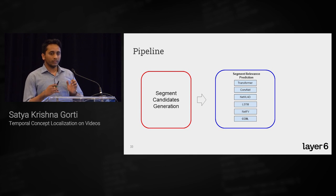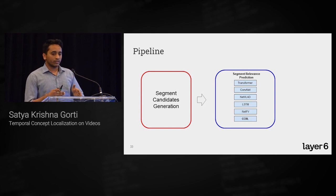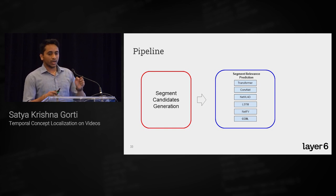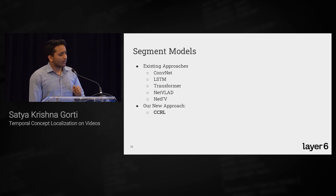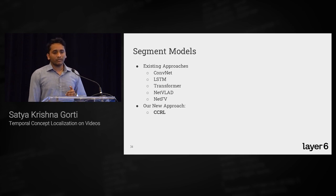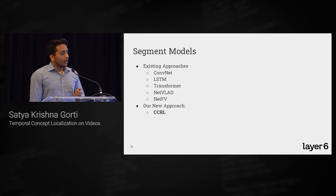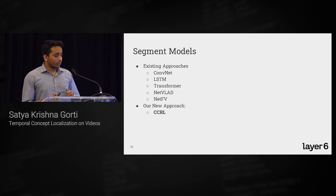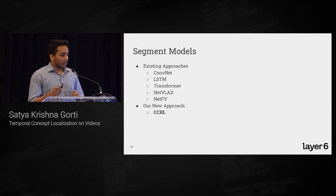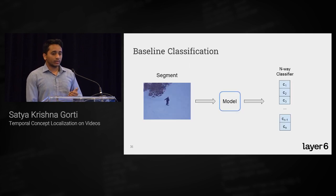In Stage 1, a state-of-the-art model reduces the search space. In Stage 2, all the models discussed — ConvNets, LSTMs, Transformers, NetVlad, and our best model CCRL (Cross-Class Relevance Learning) — predict class likelihoods on the candidate segments coming out of that pool.